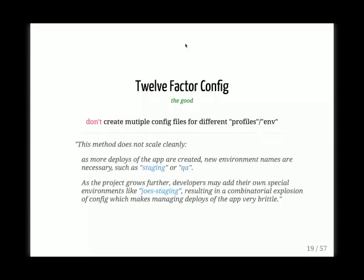Another good part: don't create multiple configs with different profiles or environments, because — as 12-factor config puts it — this results in combinatorial explosion. If you work with teams of more than three or four people, or with different teams like QA, production, or staging, you quickly realize that everybody likes their own environment and their own files, and that gets very messy.